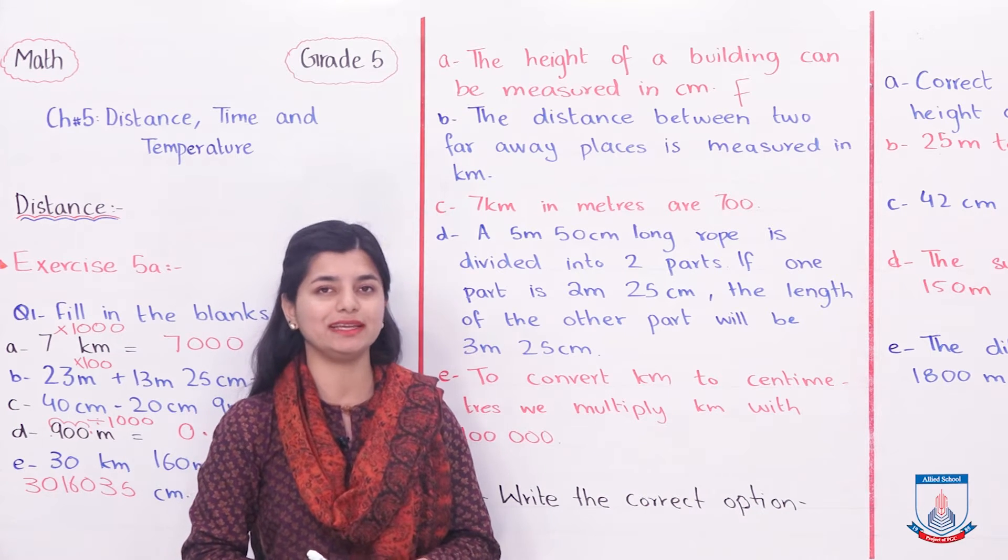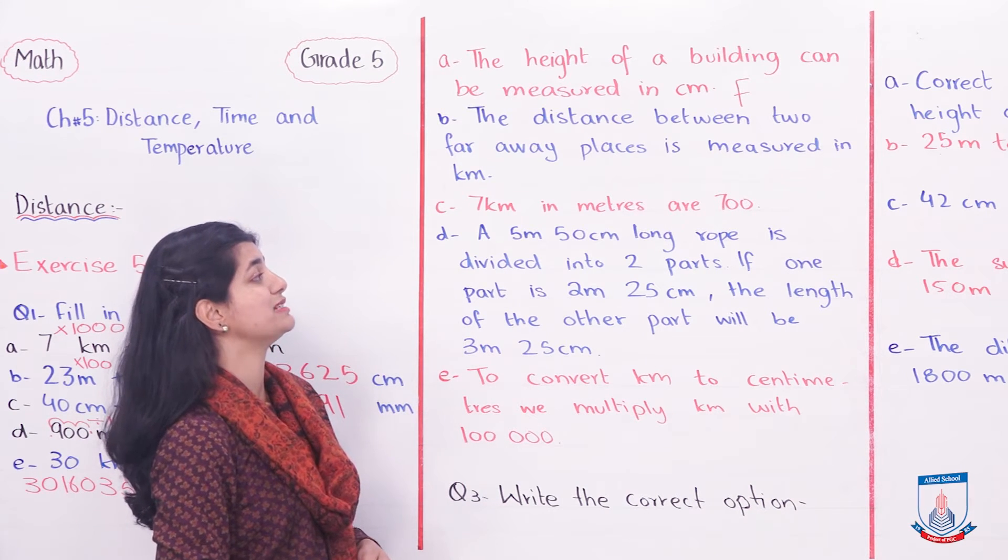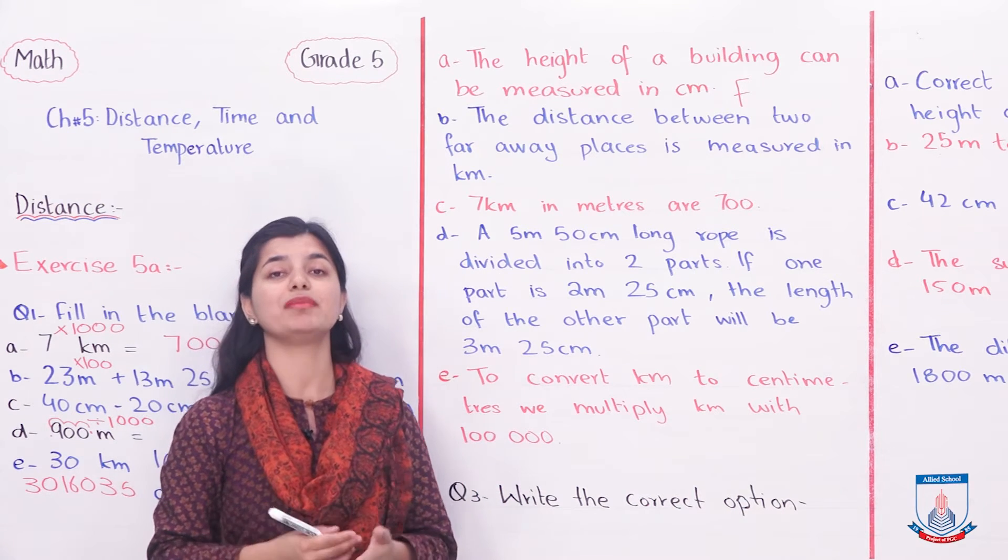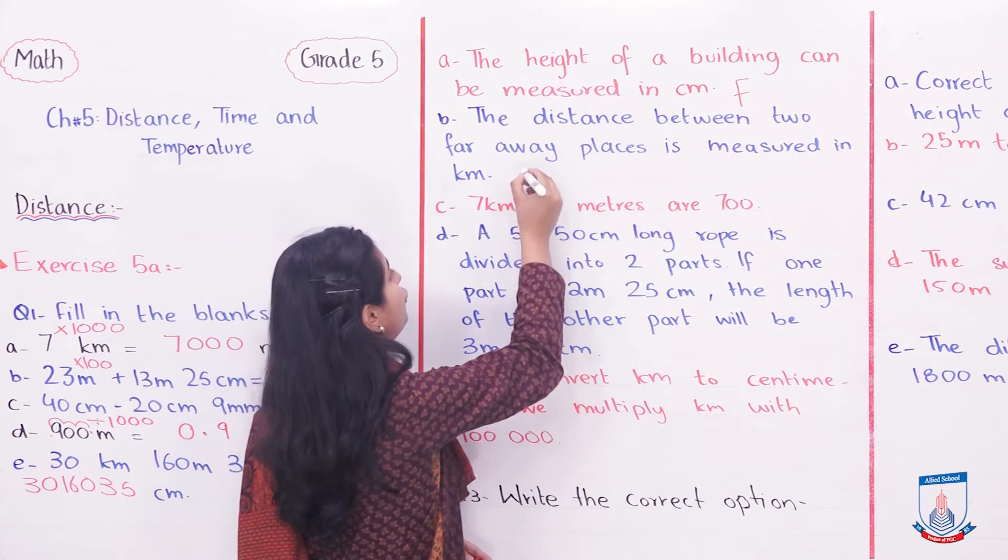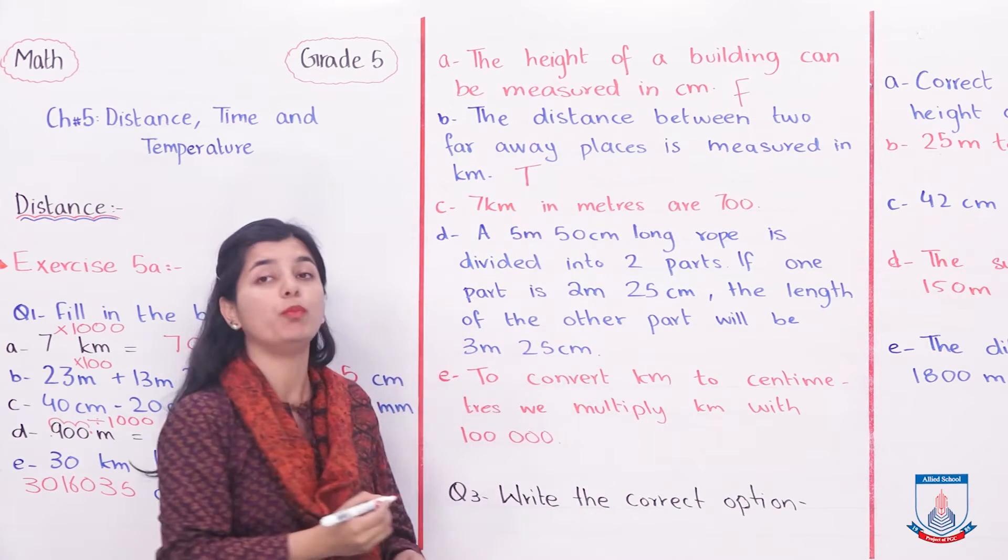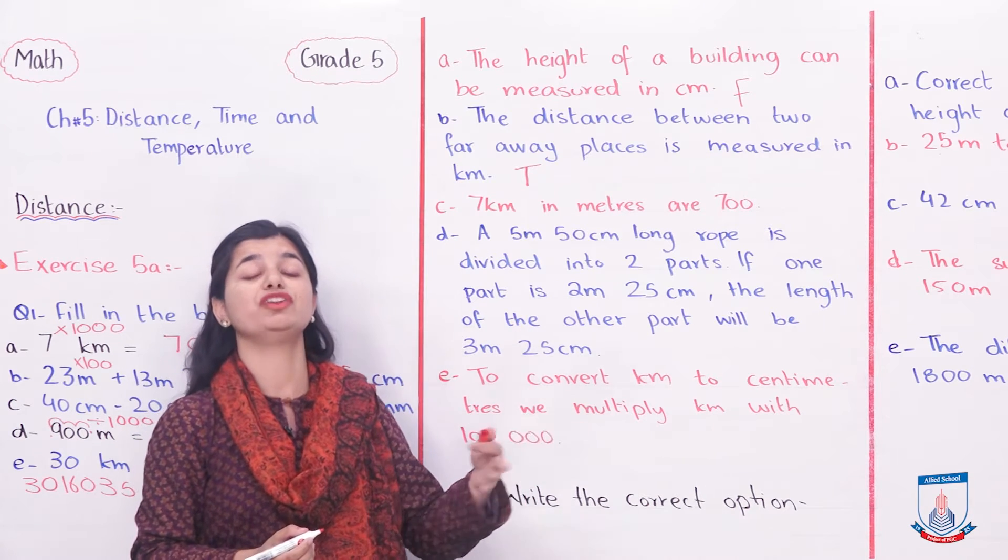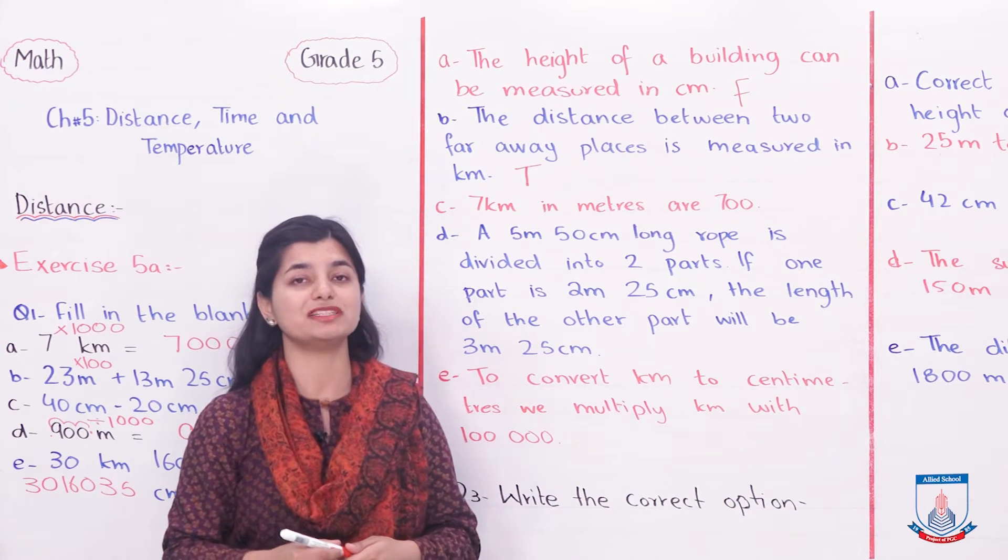Part B: The distance between two far away places is measured in kilometers. Yes, definitely true because for two very far away places, like Lahore to Islamabad 350 and something kilometers, we measure the distances in kilometers.